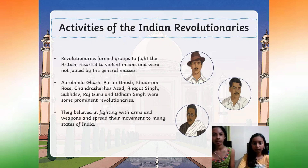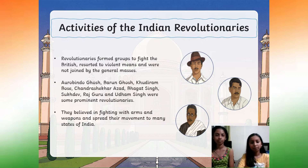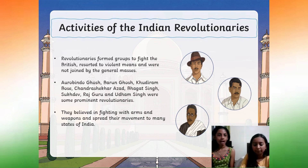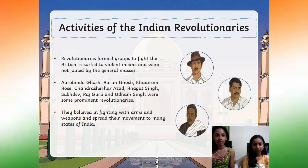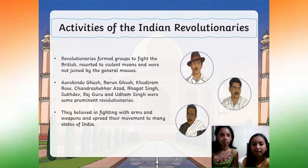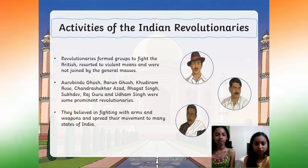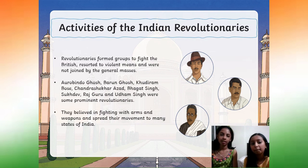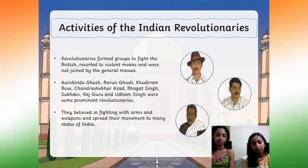Activities of Indian Revolutionaries. The revolutionaries formed groups to fight the British, resorted to violent means, and were not joined by the general masses. Aurobindo Ghosh, Barindra Ghosh, Khudiram Bose, Chandrasekhar Azad, Bhagat Singh, Sukhdev, Rajguru, and Udham Singh were some prominent revolutionaries. They believed in fighting with arms and weapons and spread the movement to many states of India.